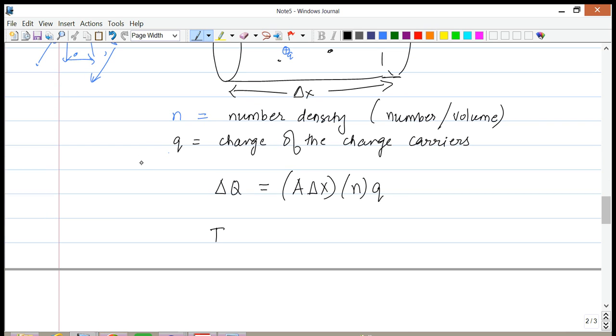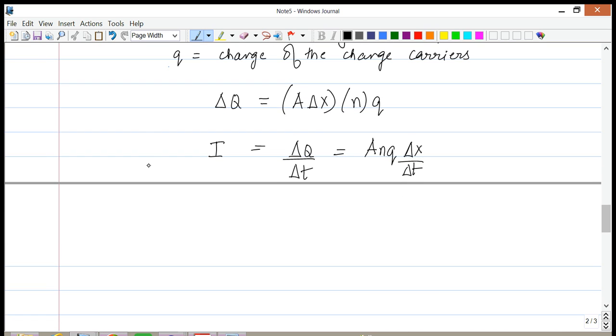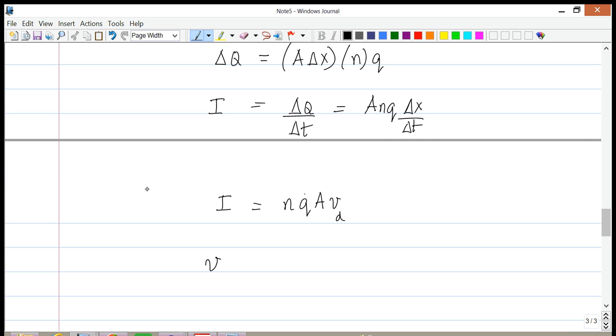And the current I is simply equal to delta q over delta t, which happens to be equal to A times n times q times delta x over delta t. And this delta x over delta t, I'm going to write this as nqA times v sub d. This v_d is called the drift velocity of the electrons.